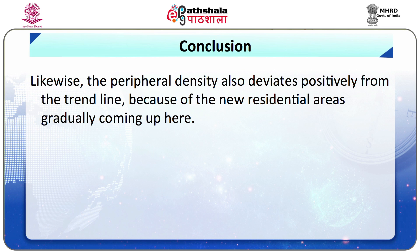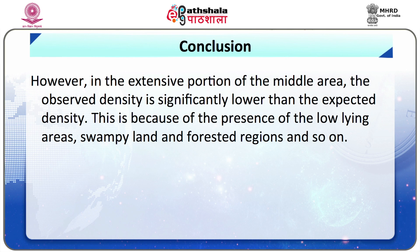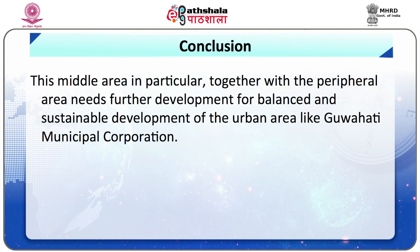Analysis of the distance-density relationship reveals that the gradient is very steep. The observed central density is found to be significantly higher than the expected one. Likewise, the peripheral density deviates positively from the trend line because of new residential areas gradually coming up there. However, in the extensive middle areas, the observed density is significantly lower than the expected density, because of the presence of low-lying areas, swampy land, and forested regions. This middle area of the city, together with peripheral ancillaries, needs further development for balanced and sustainable development of the urban areas like Guwahati Municipal Corporation.